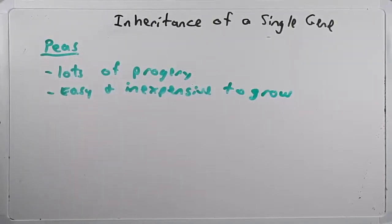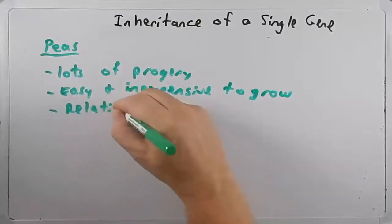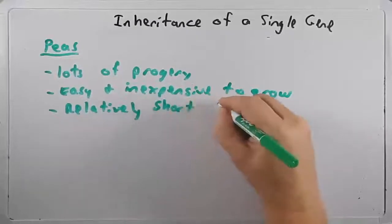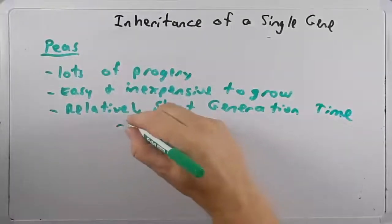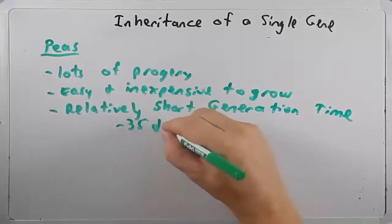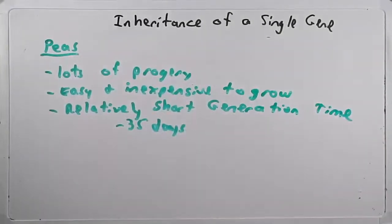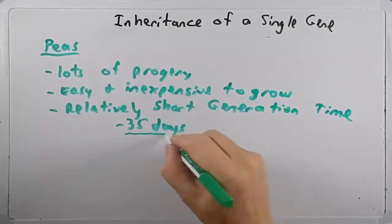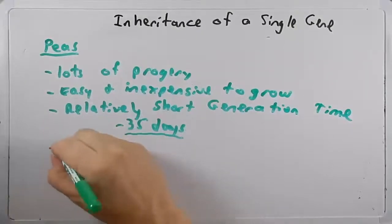There is a relatively short generation time, which for the peas was about 35 days between the time you planted them and you could actually make your observations. Now today, this turns out to be a pretty long generation time because we have model organisms that grow much faster. But in the 1850s, 1860s, this was a pretty good choice.